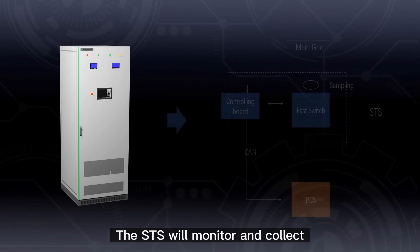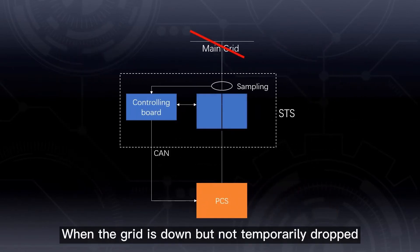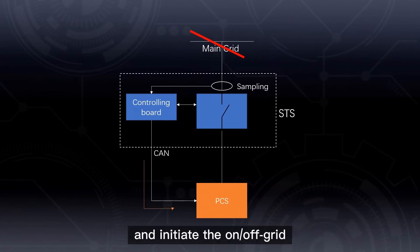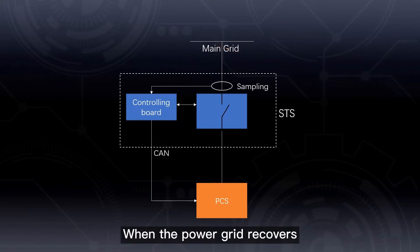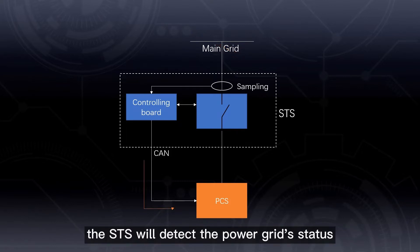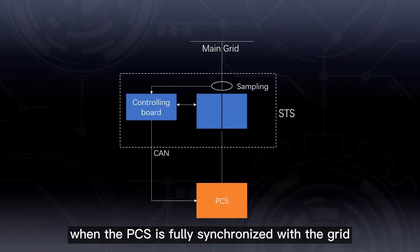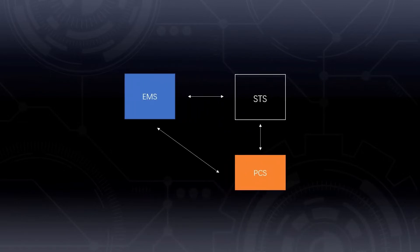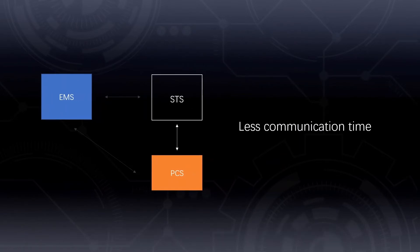So how does STS work? The STS will monitor and collect real-time grid data. When the grid is down — not temporarily dropped — the STS will disconnect the fast switch and initiate the on-grid and off-grid switching command to the PCS monitoring system. When the power grid recovers, the STS will detect the grid status and connect the fast switch once the PCS is fully synchronized with the grid, saving communication time among the normal transfer switch, PCS, and EMS.